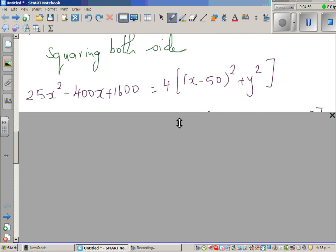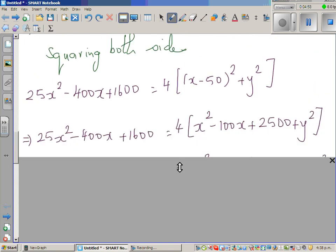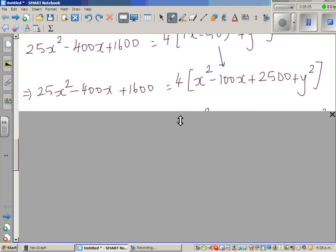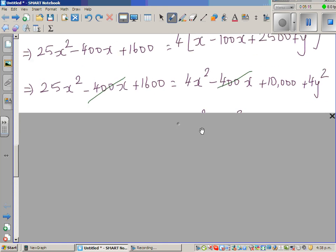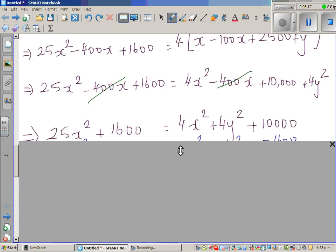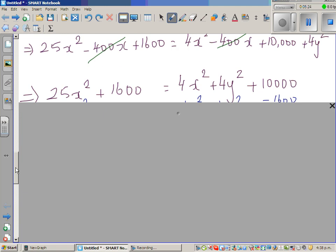What happens next? Next is simple expansion. This expands to this. Again now this is simple algebra. It's expansion. If you expand with 4 you will get this. So minus 400 and minus 400x from both sides will get cancelled. So what remains is 25x² + 1600 = 4x² + 4y² + 10,000.